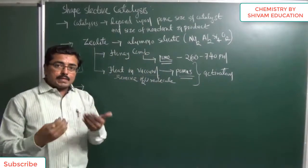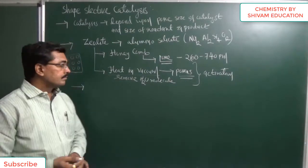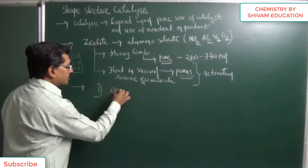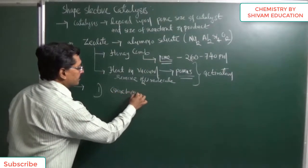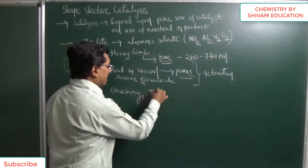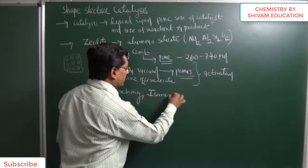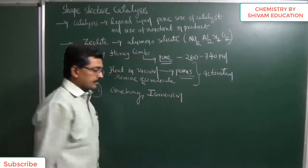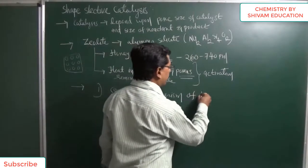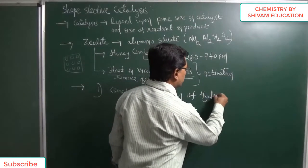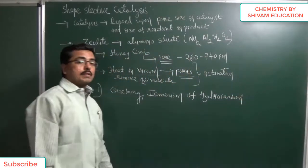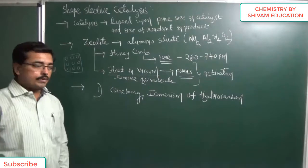Zeolite can be used as a catalyst for a variety of phenomena. Generally, it is used for cracking and isomerization. Cracking means breaking big molecules into small molecules. Isomerization means converting a molecule into its isomer. So zeolite is very well used for cracking as well as isomerization of hydrocarbons.